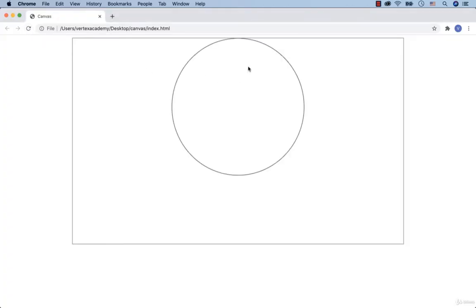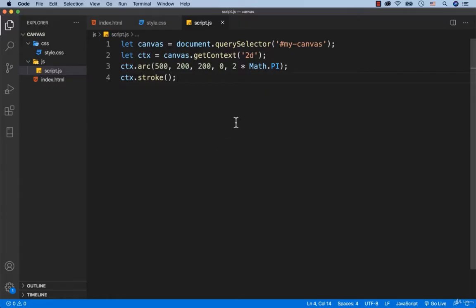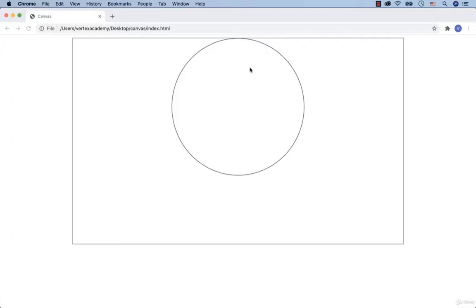Great! The circle has appeared. Now let's delete the number 2 so that we only have Math.PI. And this time we've drawn the semicircle. Right here we have 0 radians and here we have the value of the number pi.